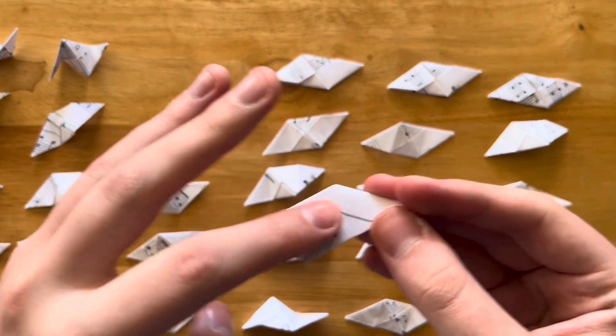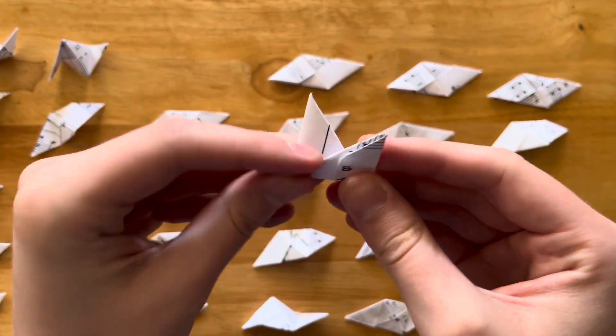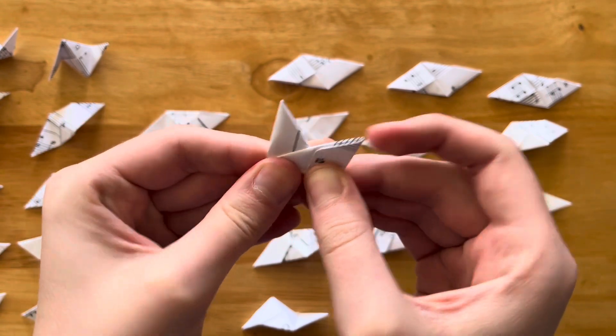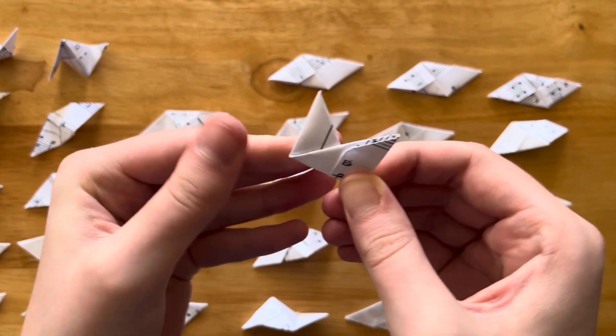So again, flat side, fold it in half so you make little fox ears. This one's giving me a little bit of a hard time. Come on. There we go.